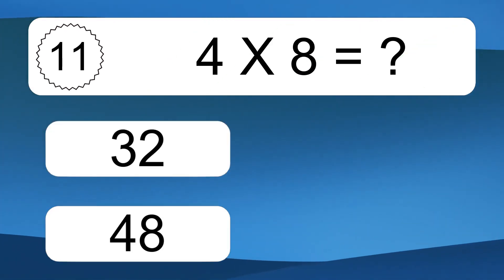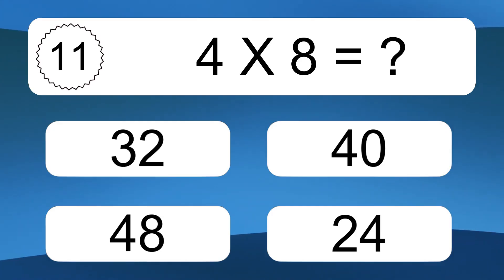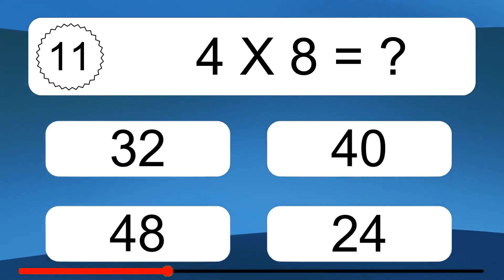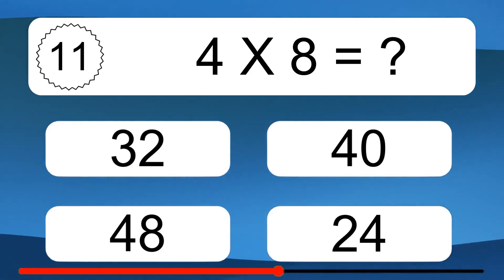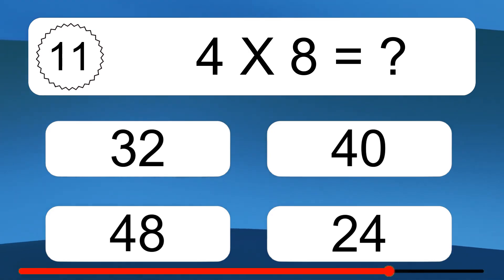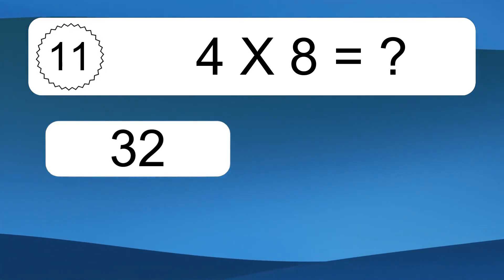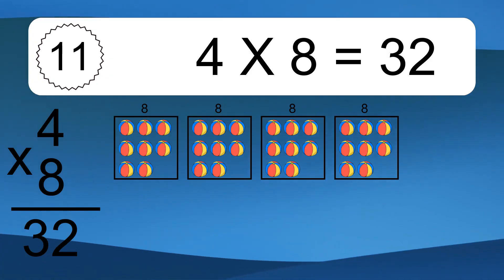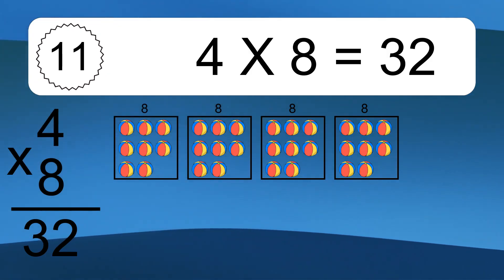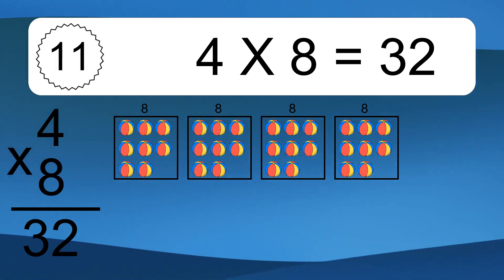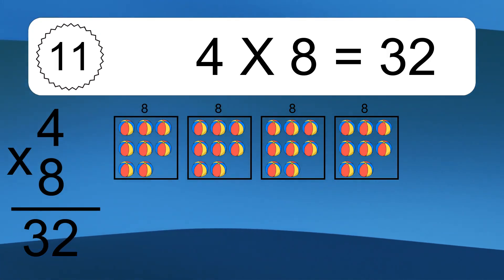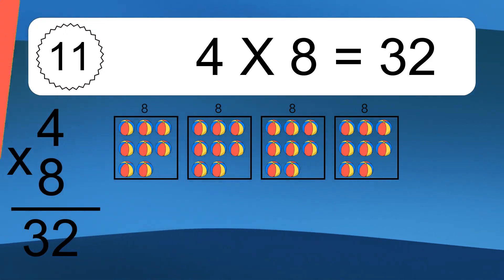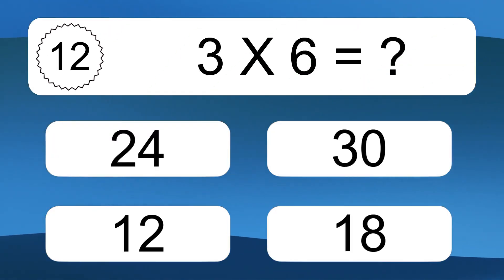4 times 8 equals what? 4 times 8 equals 32. We have 4 boxes, and each box has 8 colorful balls inside. If you count all the balls in all the boxes together, you will have 4 times 8 balls. This equals 32 balls.